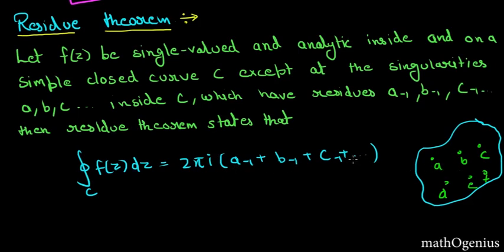I've just generalized it to infinite residues but you will have like five or six singularities. Then you have to find the residues at those singularities, add them, multiply by 2πi, you will have the integral value.